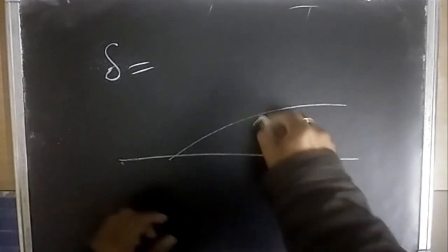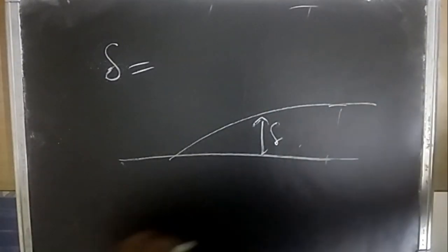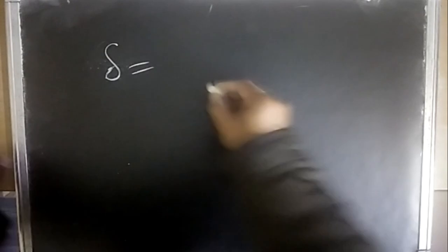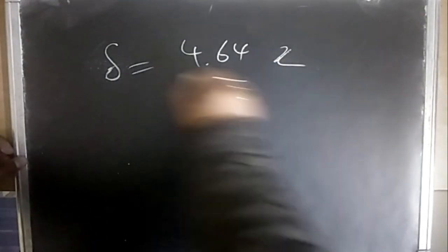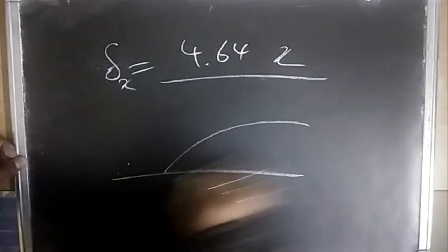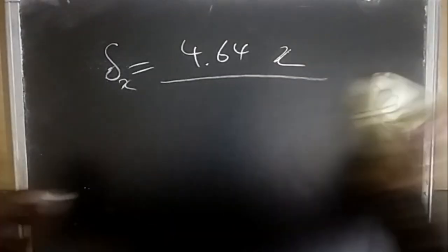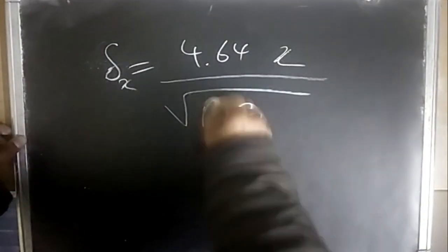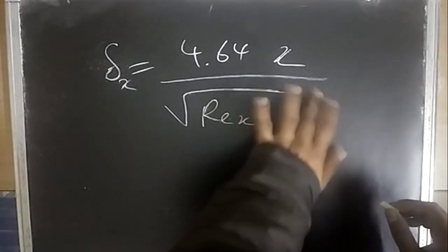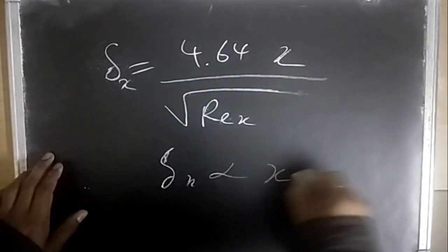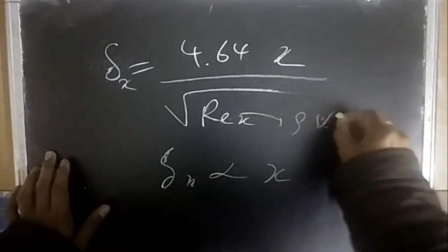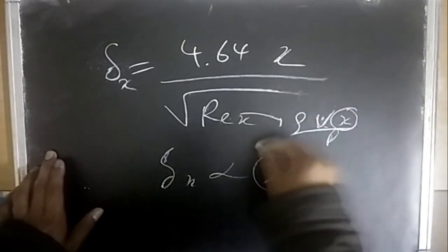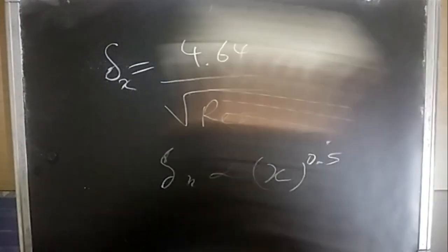For boundary layer thickness δ on a flat plate: for laminar flow, δ = 4.64x / √(Re_x), or approximately δ = 5x / √(Re_x). Since Re_x = ρVx/μ, the x dependence gives δ ∝ x^0.5. The laminar drag coefficient is C_D = 1.33 / √(Re_L).